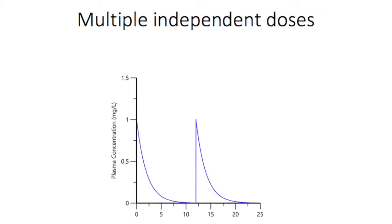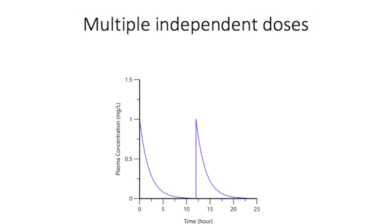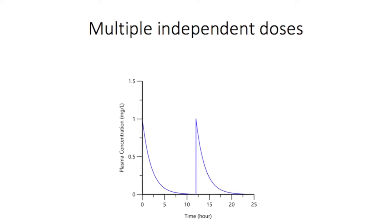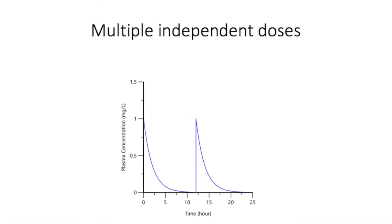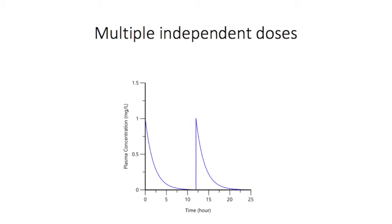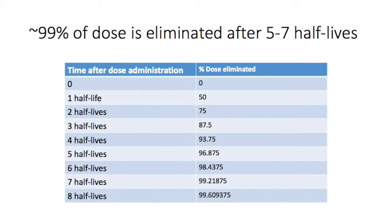First, we should examine the scenario of multiple doses administered so far apart that they can be considered individual independent doses. This happens when the dosing interval is so long that drug concentrations from the first dose fall to essentially zero before the next dose is given. How long does such a dosing interval need to be? Well, it depends on the half-life of the drug.